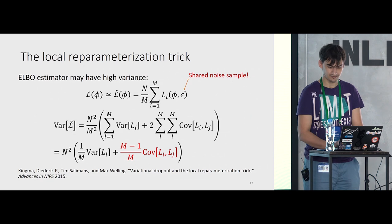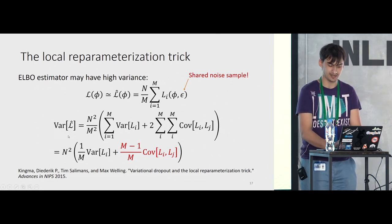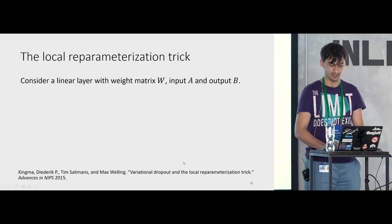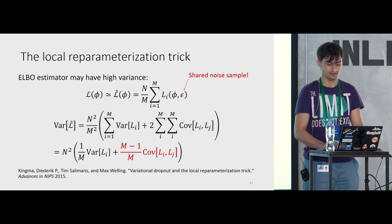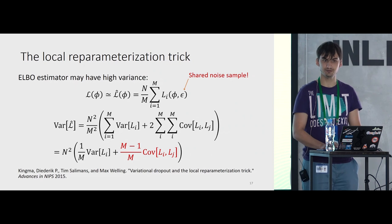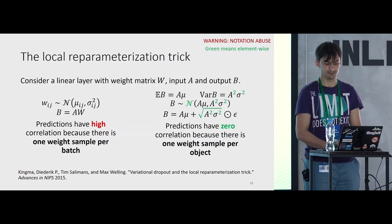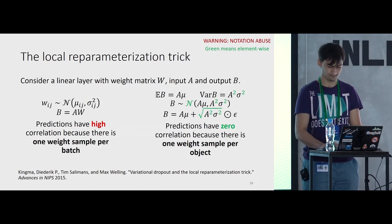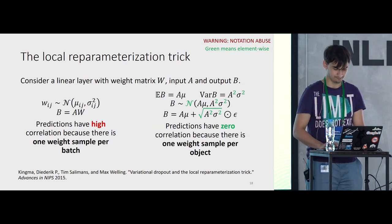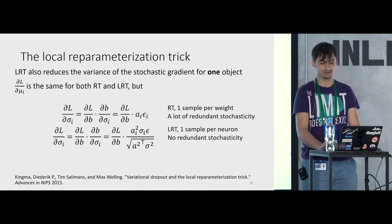The problem was the shared noise sample: when we calculate the variance of the estimator, there is a covariance term because predictions for different objects are correlated. This contribution is very large. The simplest way to avoid this would be to sample one weight matrix per object — expensive — but you can instead calculate the distribution over B and sample from it. The local reparameterization trick also reduces variance not only for the mini-batch but even for a single object, because one sample of B completely defines the gradient with respect to sigma, removing redundant stochasticity.